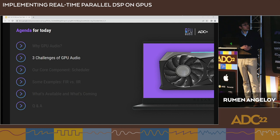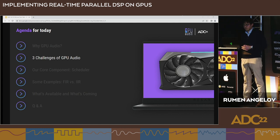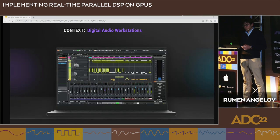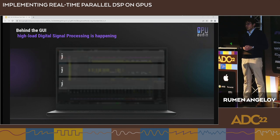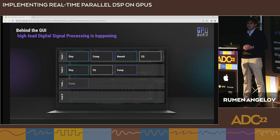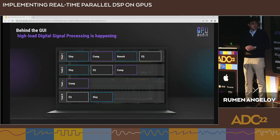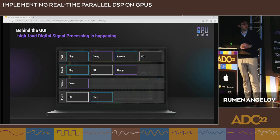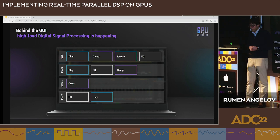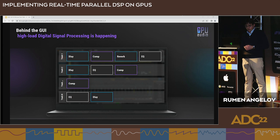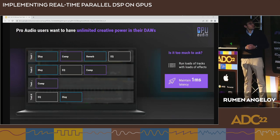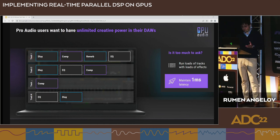The three challenges we have faced: the first is the Digital Audio Workstation. Most of the time when you use a DAW, you have chains of different effects with a lot of DSP happening behind the scenes, and on each track you have multiple different effects working together. The big challenge is that you usually cannot optimize well at a single effect level or single processing level.